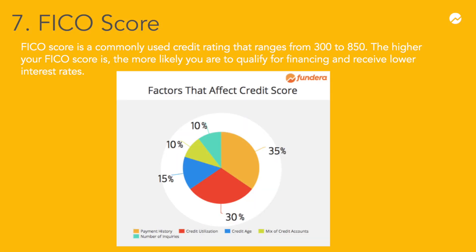Alright, so we've covered some business finance terms that you're likely to see on your financial statements. Now we're going to switch gears and cover some debt and credit related business finance terms, starting with FICO score. If you've bought a home or a car recently, you might already know this term. FICO score is a widely used type of credit score, calculated by a credit rating agency called the Fair Isaac Corporation. The FICO score ranges from 300 to 850, and the higher your FICO score, the more likely you are to qualify for financing and to receive lower interest rates.